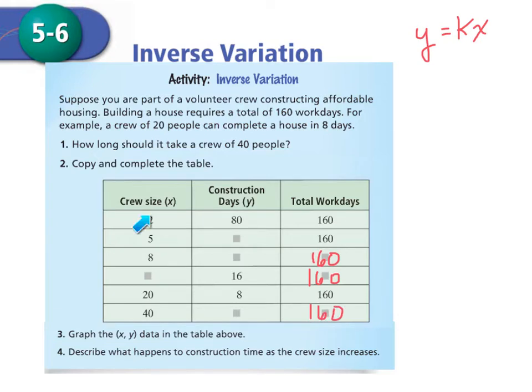As you can see, 2 times 80 gives you 160. So 5 times what gives you 160? It would be 32. 8 times what gives you 160? 20. What crew size multiplied by 16 days will give you 160? It'd be 10. And 40 times what gives you 160? It'd be 4. So how long would it take a crew of 40 people? It would take 4 days.